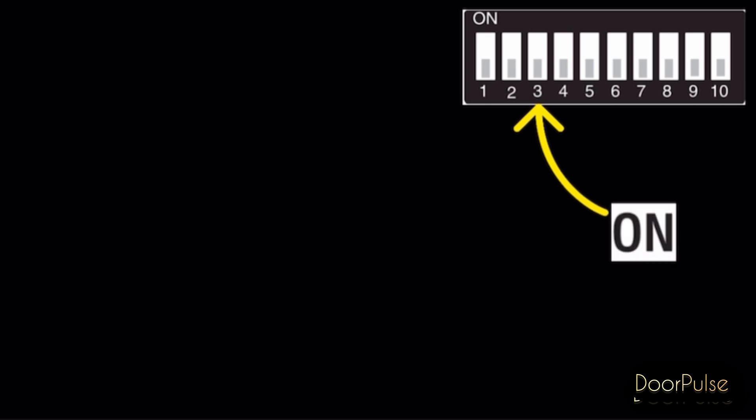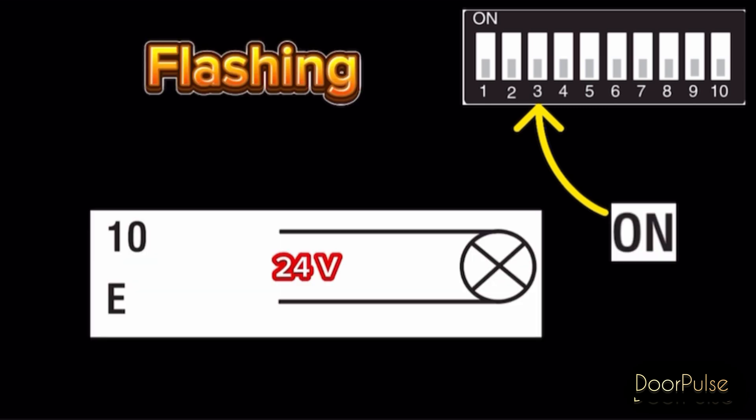Switch 3 on, 24 volt output on pin 10 and pin E during the boom's movement phases and when it is in close position. Switch 3 off, 24 volt output on pin 10 and pin E during the boom's movement phases.